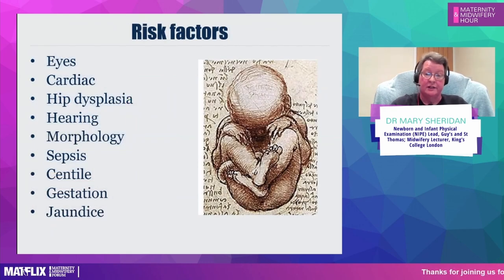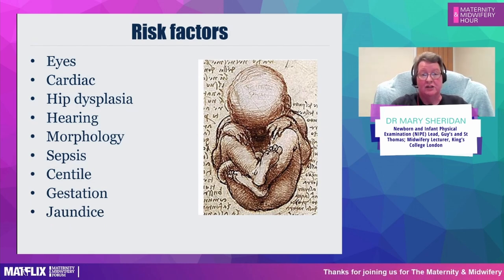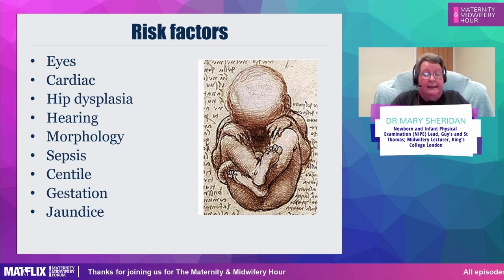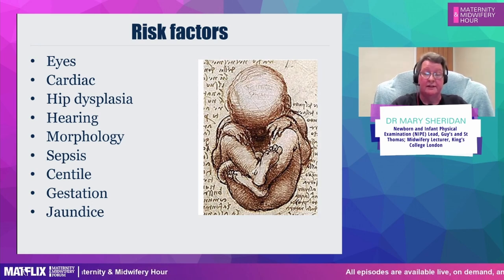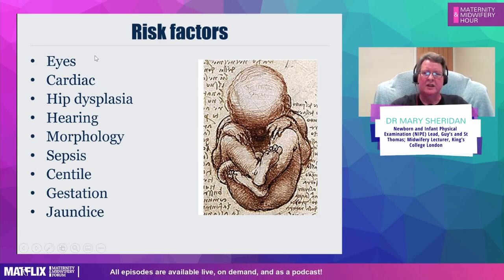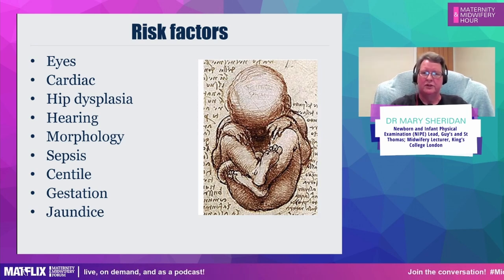Following on from the first presentation, obviously a lot is related to genetics and the development of the foetus. If we think about the first four risk factors — eyes, cataracts, cardiac conditions, hip dysplasia, and also hearing, which is undertaken by the hearing screeners — these all have quite a strong family history and we're not sure if they all have a genetic significance, but increasingly we are finding that. I would suggest that a lot of these questions should be asked antenatally, and I don't think we always do that.